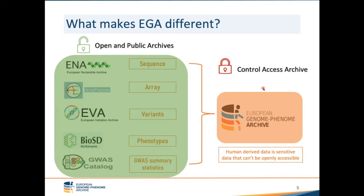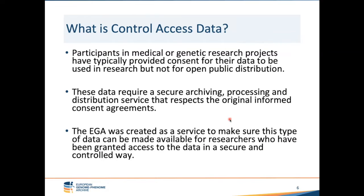EGA provides distribution for human-derived sensitive data that cannot be openly accessible. Normally, participants in medical or genetic research have provided consent for their data to be used for research but not for public distribution. For this reason, EGA was created as a service to ensure this data can be made available to researchers who have been granted access in a secure and controlled way.